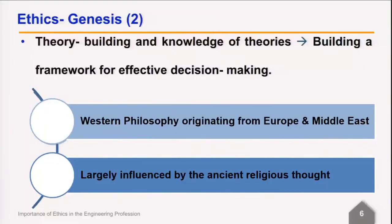Why do we take different paths is a matter of deeper concern, and this brings us to an important aspect — the genesis of how theory building and knowledge of theories builds a framework for effective decision making. What is good, what is bad, how we distinguish — technical knowledge generally helps us to know what is laid down as per a particular theory or approach, but we need to also consider other aspects that govern in this regard.